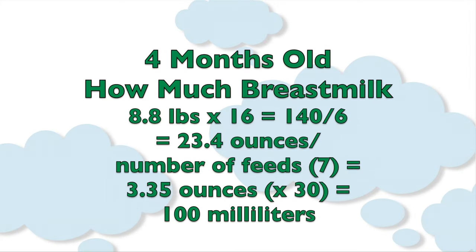Bracey weighs 8.8 pounds, so I multiply that by 16 to get the number of ounces that Bracey weighs, which is about 140 ounces. I then divide that by six and get 23.4 ounces. That amount divided by seven, which is how many times Bracey eats, tells me how much breast milk he's getting at a feeding — it's about 3.35 ounces. If I want to know how many milliliters, I multiply by 30, so about 100 milliliters.